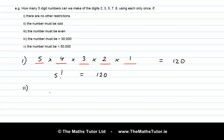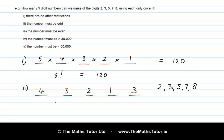In Scenario 2, the number must be odd. We have 5 slots, choosing from 2, 3, 5, 7 and 8. For a number to be odd, the final digit must be an odd digit. We have 3 odd digits to choose from — so 3 choices for the last slot. We always start with the most restrictive slot. Having dealt with that, we go back to the other slots: we've used one digit, so 4 choices remain, then 3, then 2, then 1. Multiplying: 4 × 3 × 2 × 1 × 3 = 72 different arrangements.